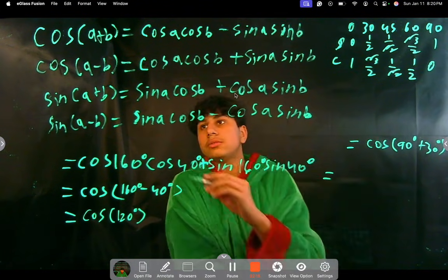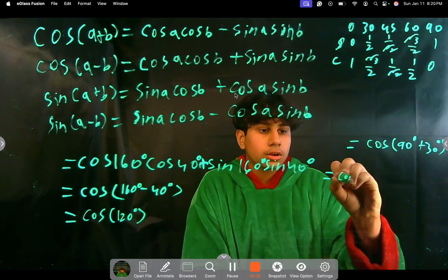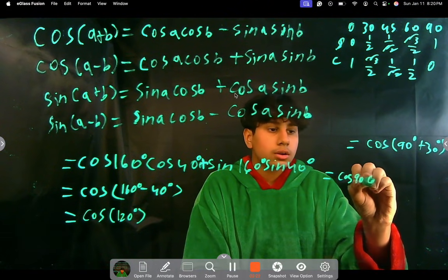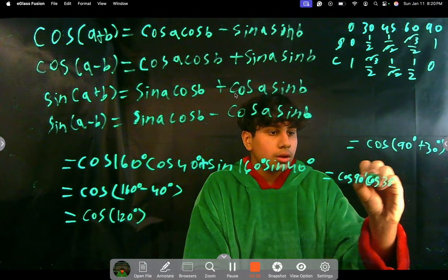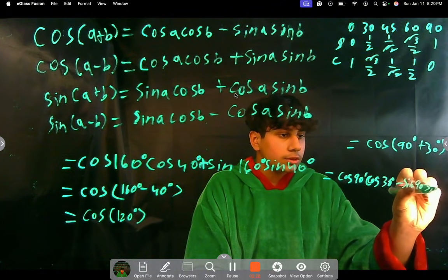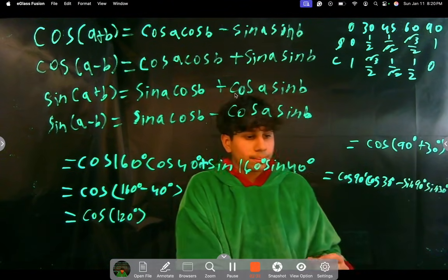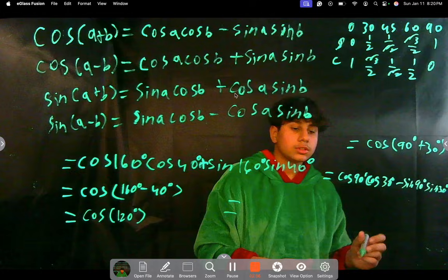So cosine of 120 addition formula. So it's cosine 90 cosine 30 minus sine 90 sine 30. Sorry if that's pretty small, but I'm going to simplify it here.